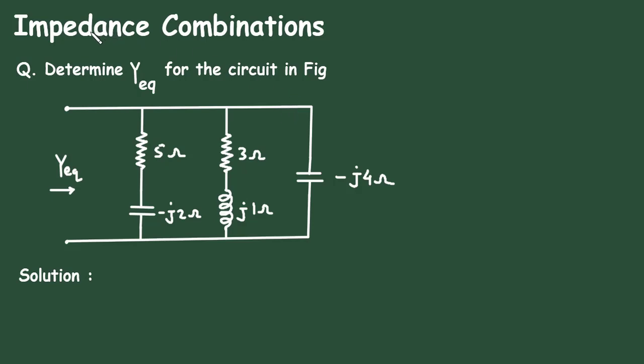In this video, we will see an example on impedance combinations. Question: determine Y_eq. That is, we have to find the equivalent admittance for the circuit in the figure. For this circuit, we have to find its equivalent admittance.